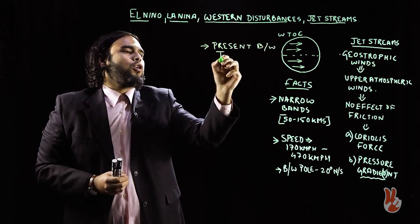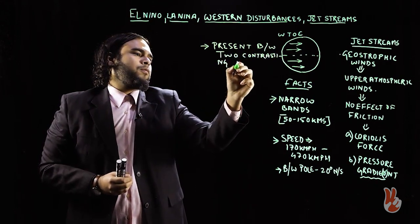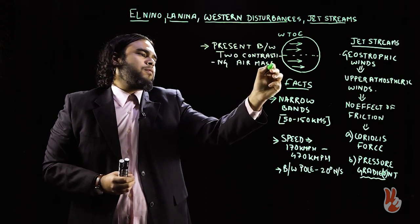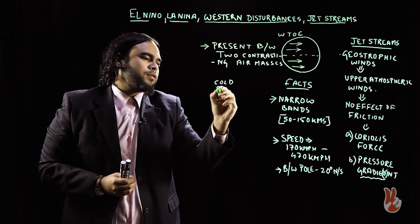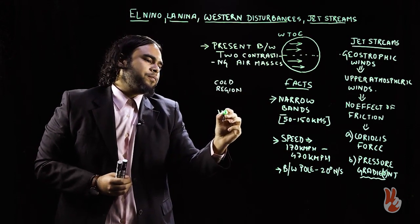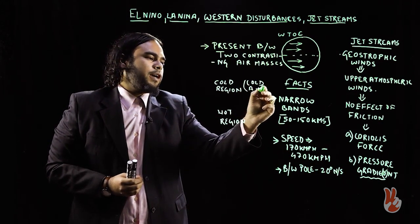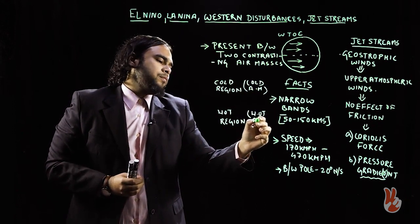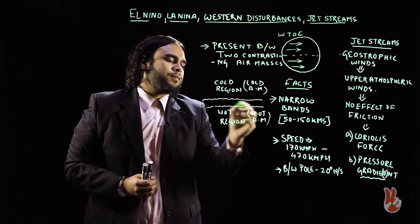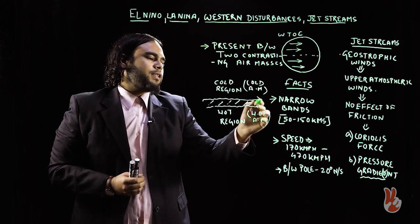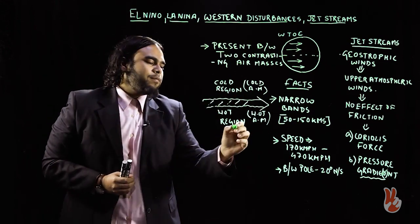Jet streams are present between two contrasting air masses — for example, a cold air mass and a hot air mass — and jet streams flow in between them. Another important fact about jet streams is that they do not move in a straight path; they meander.